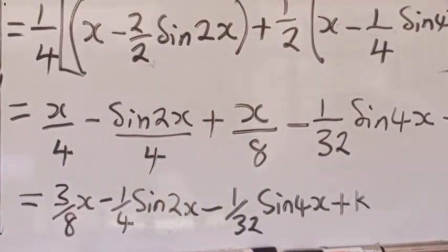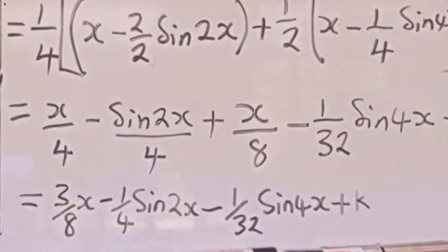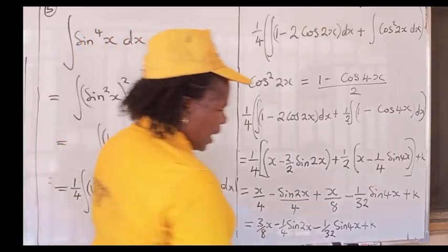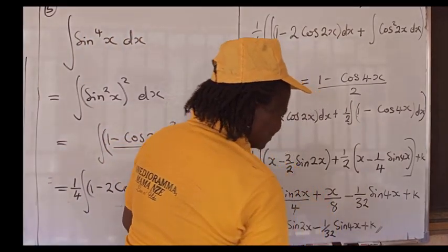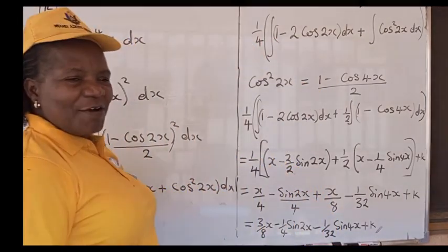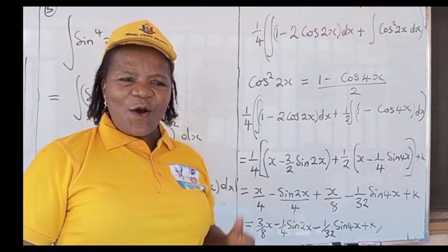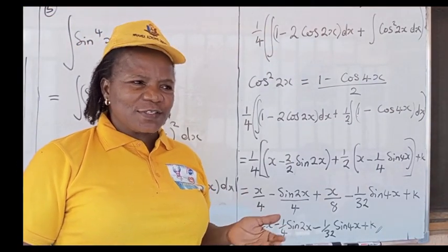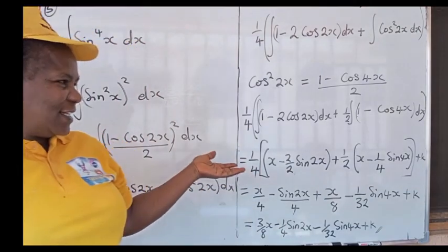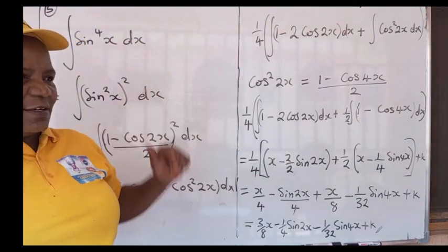So we have 3 over 8 x minus one quarter sin 2x minus one over 32 sin 4x plus k. And we are done. Any even power of sin or cos can be integrated similarly.